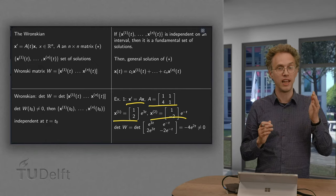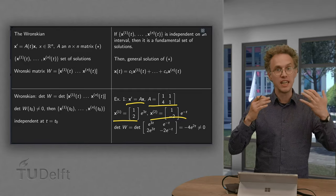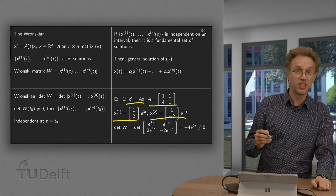So a solution equals x equals c_1 x^(1) plus c_2 x^(2). Is that all there is? Is this a general solution? We check the Wronskian.